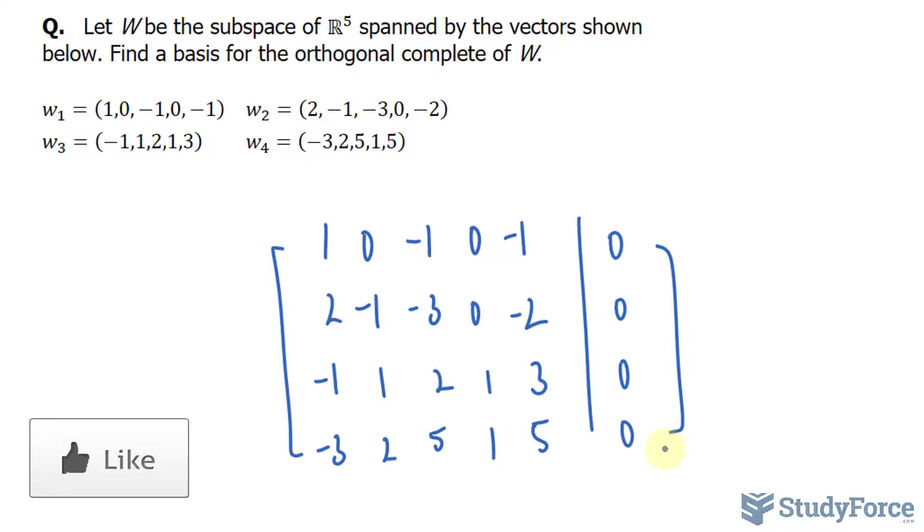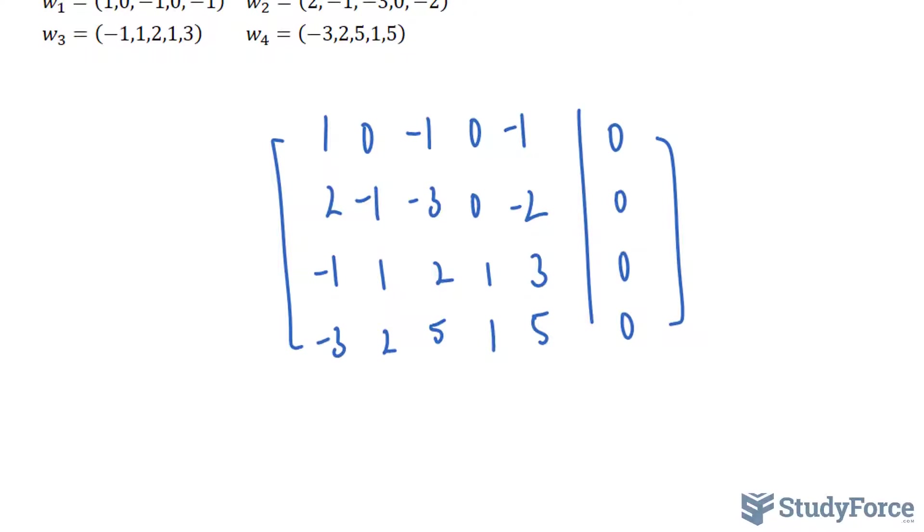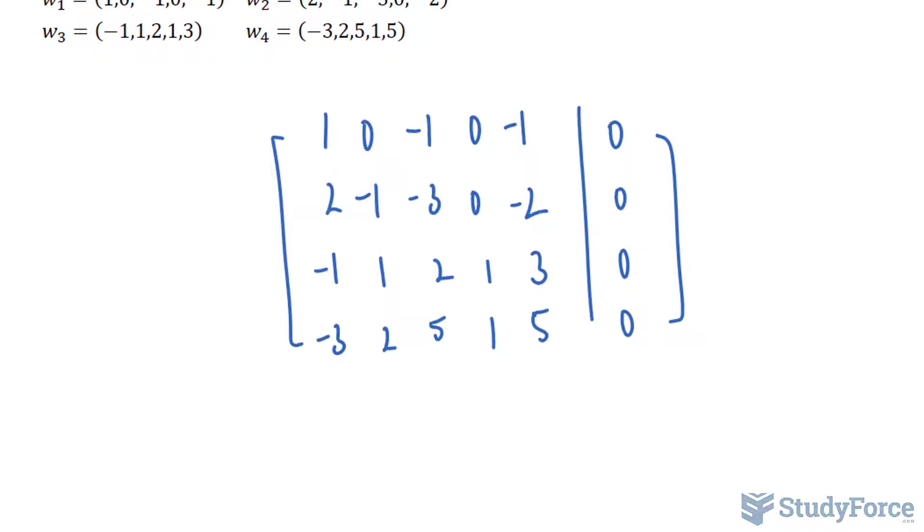I'm going to assume that you already know how to do this. You already know how to row reduce this down so that you have leading ones. And if you do it correctly, you should end up with the following matrix. I encourage you to use a calculator to do this because you don't want to waste your time finding the row reduced echelon form. This is what it should look like.